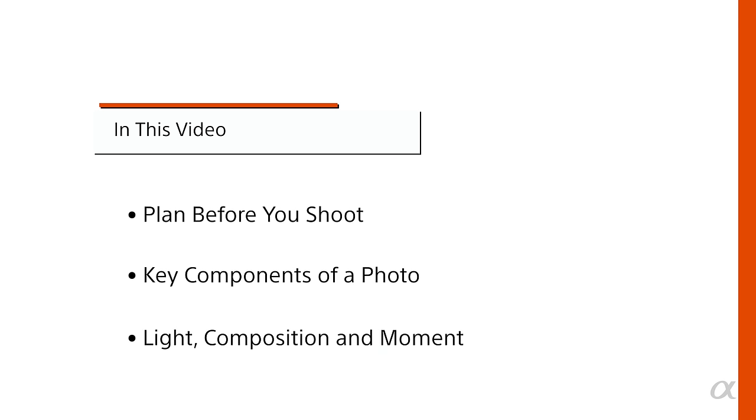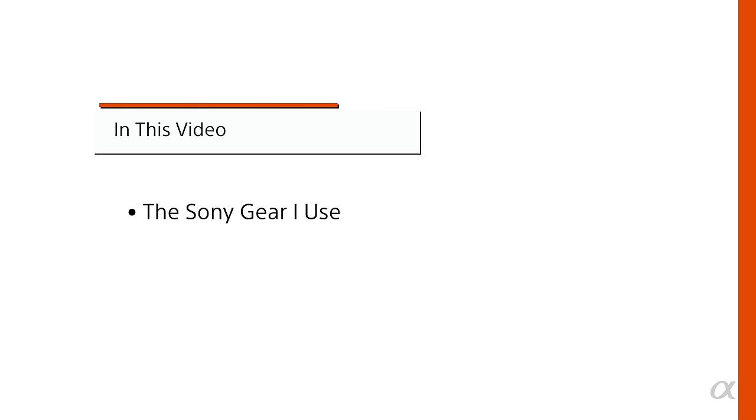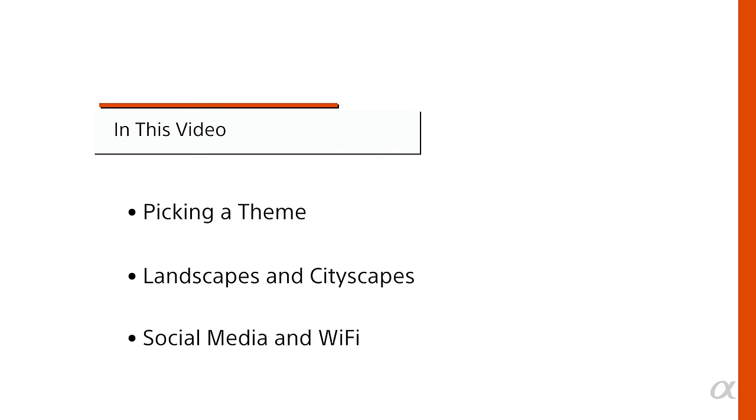In this video, you learned about planning before you shoot, the key components of a photo including light, composition, and moment, the Sony gear I use, high ISO and fast shutter speeds, the wide dynamic range of Sony cameras. You also learned about picking a theme, landscapes and cityscapes, and finally, social media and Wi-Fi. Keep all this in mind, keep practicing, and you'll take better pictures.